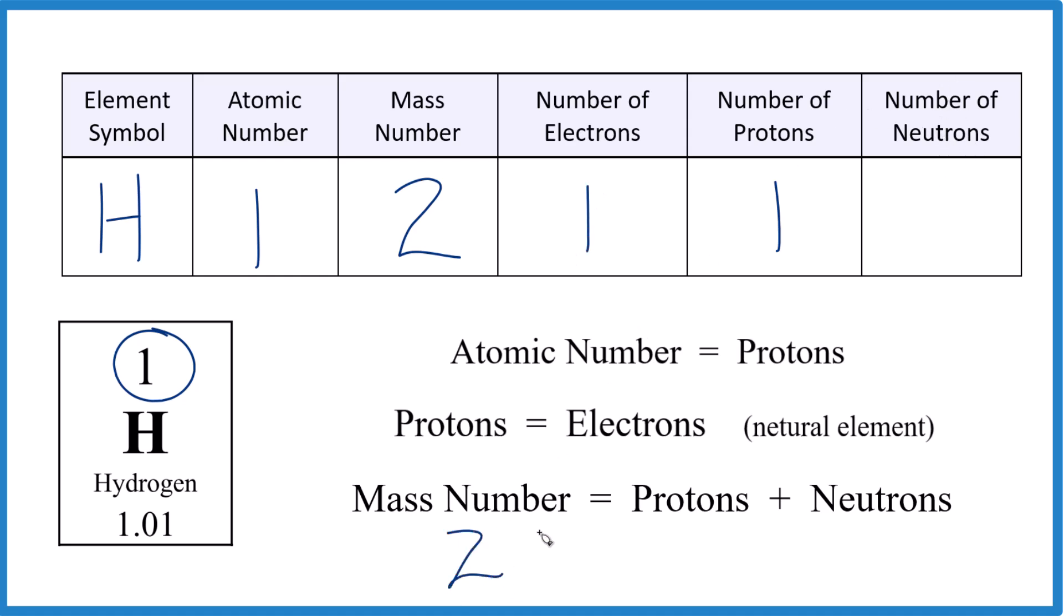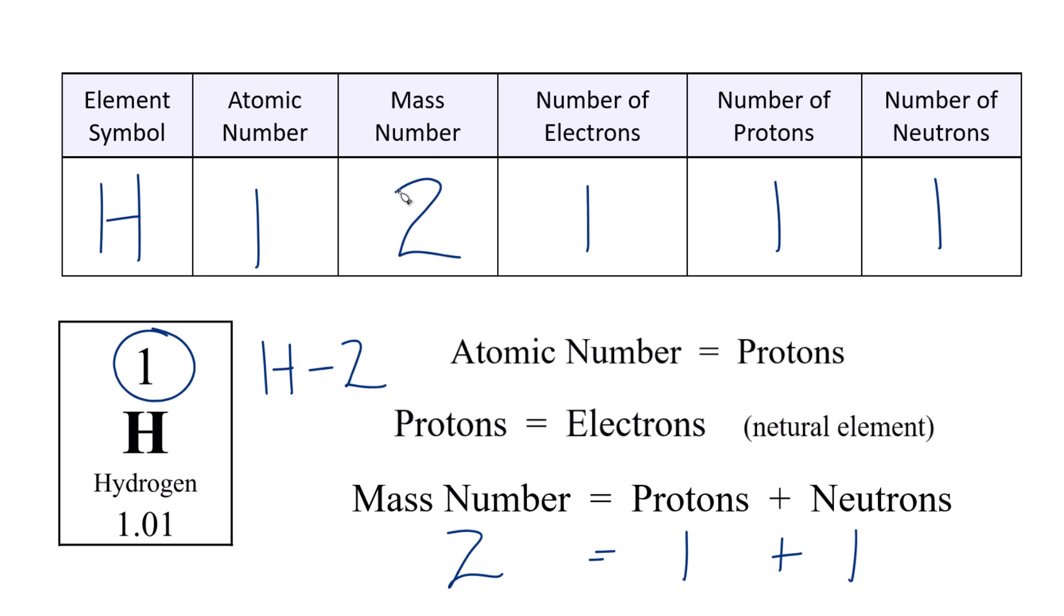So we said the mass number is two. We have one proton, so something plus one equals two. One plus one equals two. So this isotope here of hydrogen has just one neutron. We could write it as H-2. Hydrogen-2, that's the mass number, and has a special name. It's called deuterium.